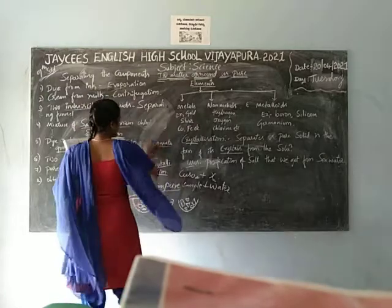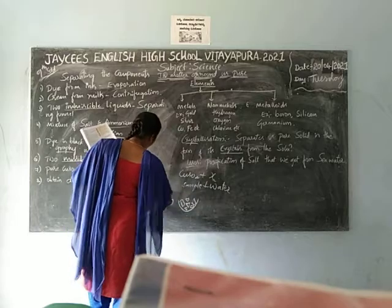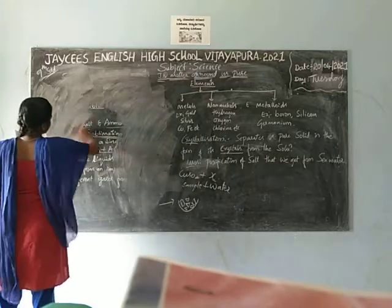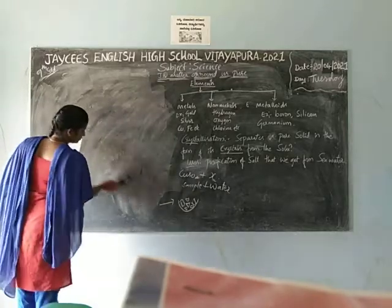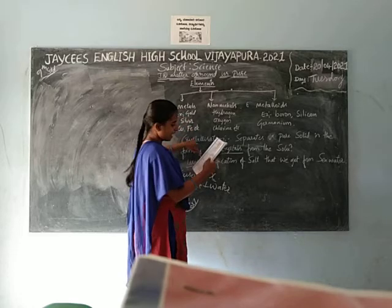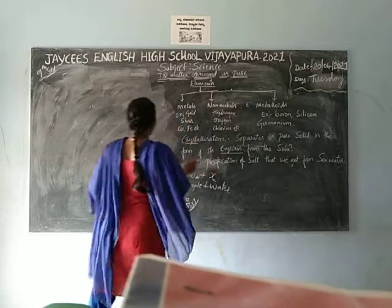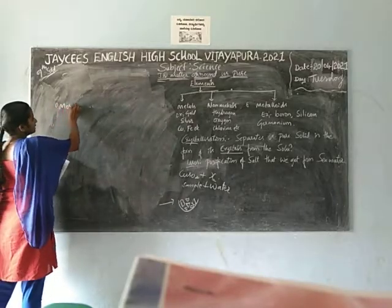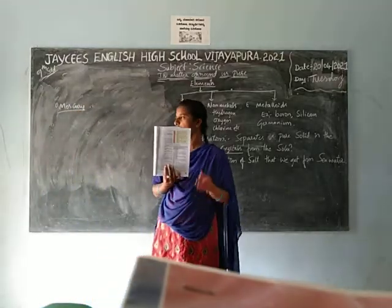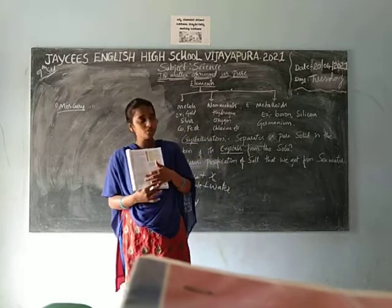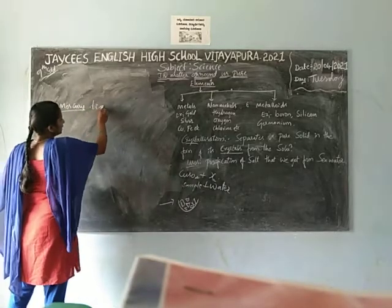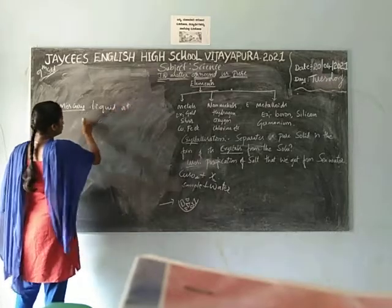Next, elements are classified into three groups: metals, non-metals, and metalloids. Metals are good conductors of heat. Examples of metals are gold, silver, copper, and iron. Only one metal is liquid at room temperature — mercury. This is covered on page number 25.